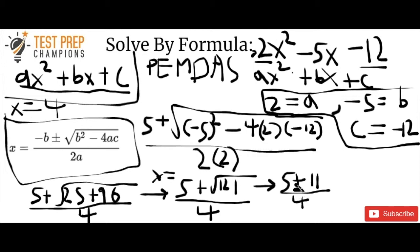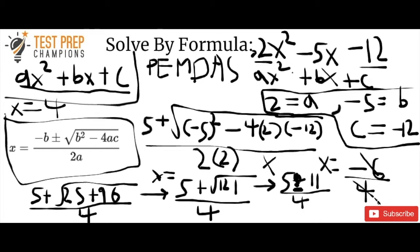Now let's do the minus. We've got x equals 5 minus 11 over 4. 5 minus 11 gives us negative 6, so we've got negative 6 over 4. We can simplify this fraction — both are even numbers, so divide each by 2. 6 divided by 2 is 3 (keeping the negative), and 4 divided by 2 is 2. So that's our other solution.